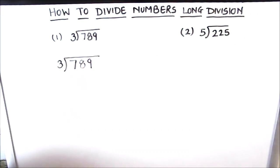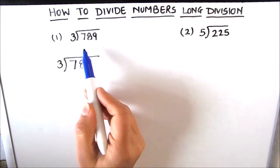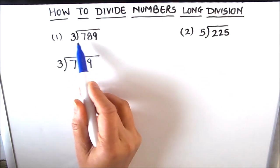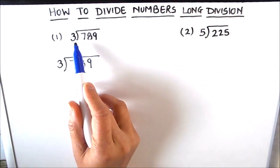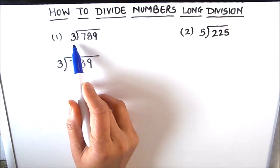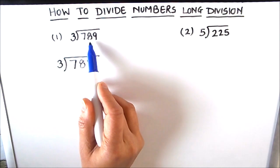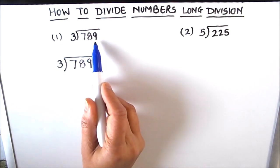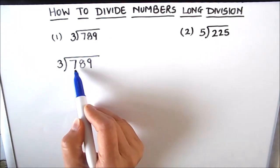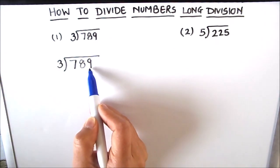For long division it is a must to know all the tables — please make sure that you know all the tables. The two numbers 789 and 3 are called dividend and divisor respectively. The number by which we are dividing, that is 3, is called the divisor, and the number to be divided, which is 789, is called the dividend.